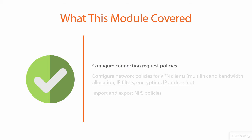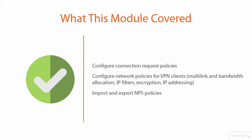What have we talked about in this module? We configured our connection request policies, or at least explored a little more deeply the things that could be configured as part of a connection request policy. We also took a look at the network policies specifically for VPN clients, and a couple of specific configurations for multi-link, bandwidth allocation, IP filters, encryption, and IP addressing — things you might want to configure if you didn't do it correctly the first time in the wizard. And then a very short look at importing and exporting NPS policies, both inside the GUI and with the PowerShell cmdlet.